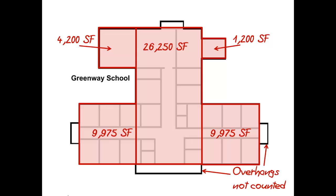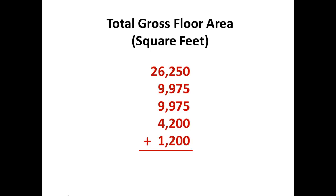Note one important thing: we're not going to include roof overhangs or covered walkways because they're not enclosed spaces. They don't have to be air-conditioned or heated, but they do have to have a floor, a ceiling, and four walls. We add up all our individual sections and come up with a total gross floor area of 51,600 square feet.